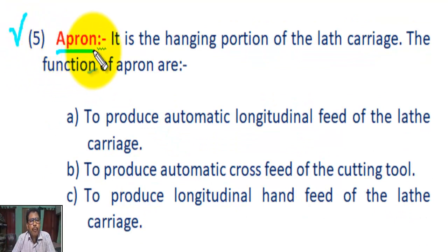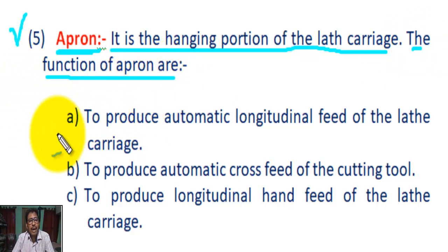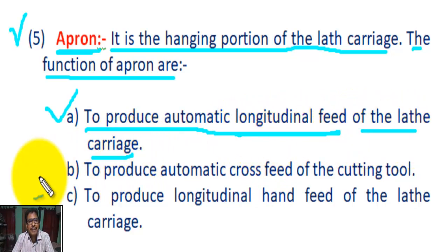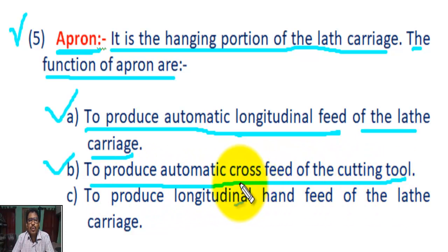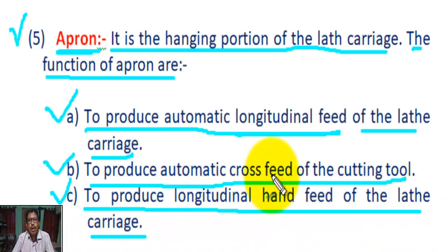Number five: Apron. It is the hanging portion of the lathe carriage. The functions of the apron are: A, to produce automatic longitudinal feed along the X-axis of the lathe carriage; B, to produce automatic cross-feed of the cutting tool along the Y-axis; C, to produce longitudinal hand feed of the lathe carriage.